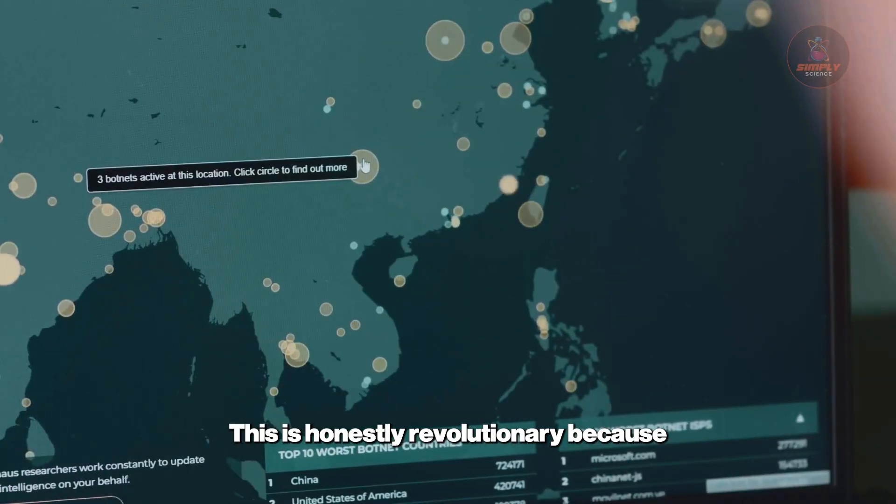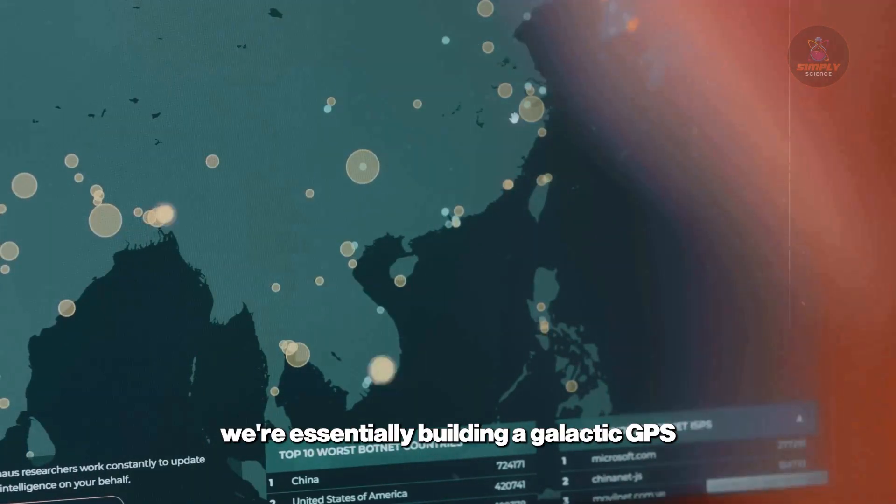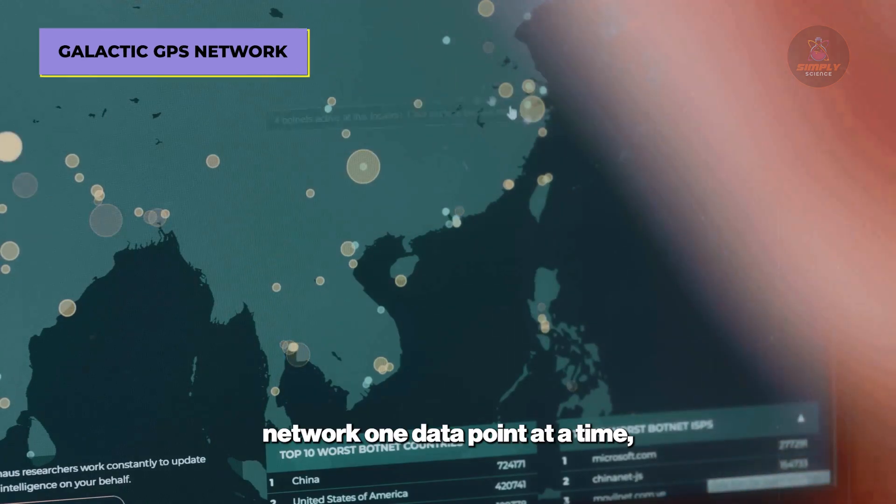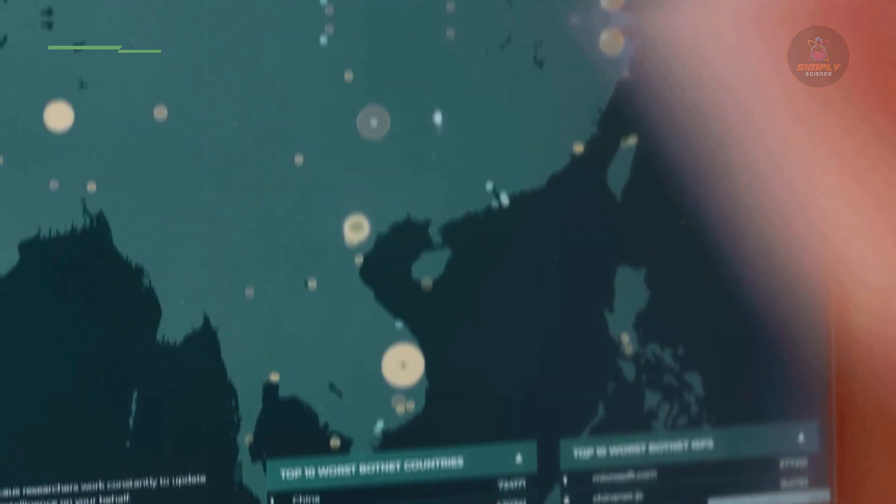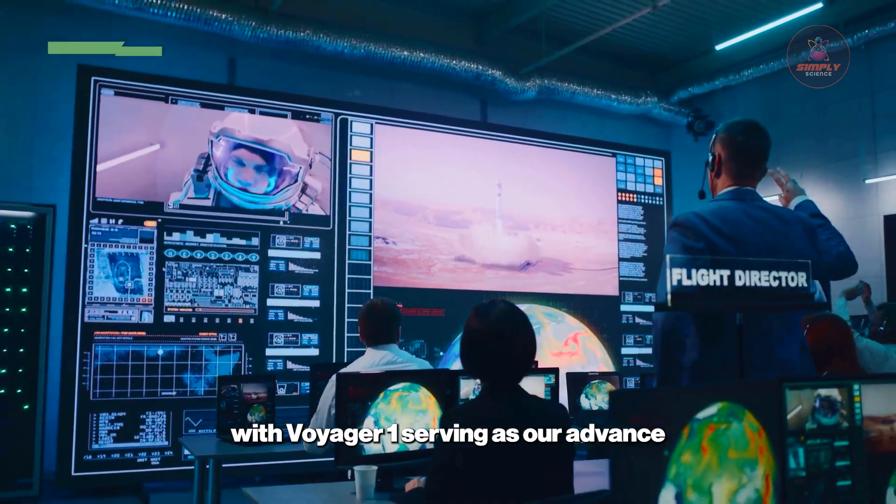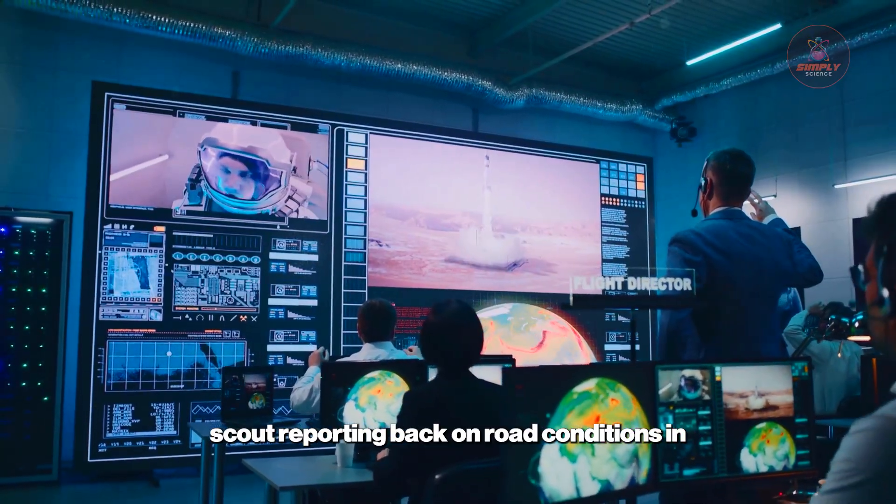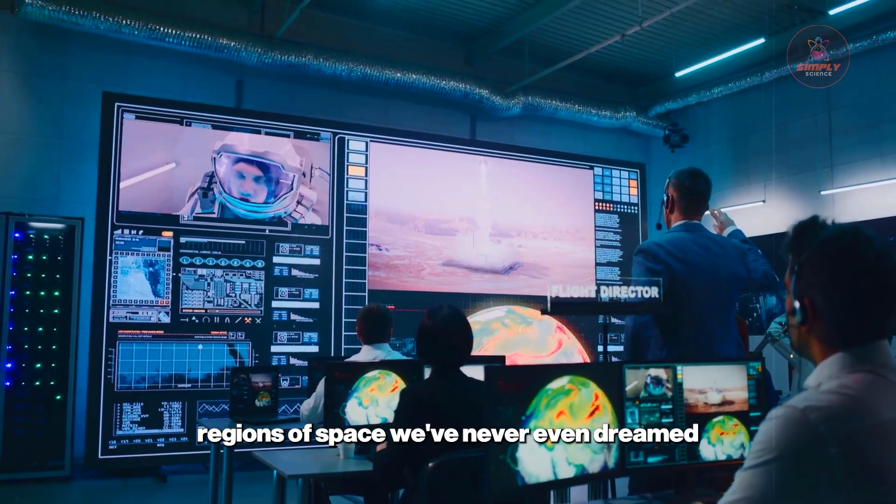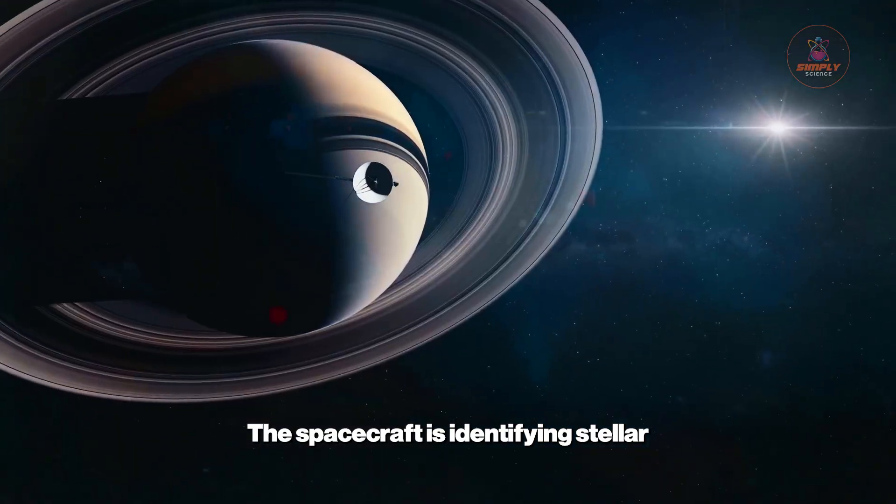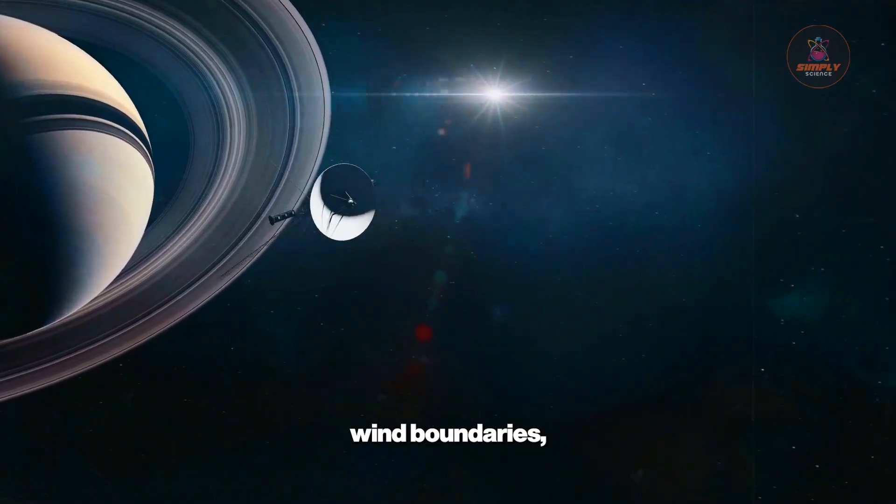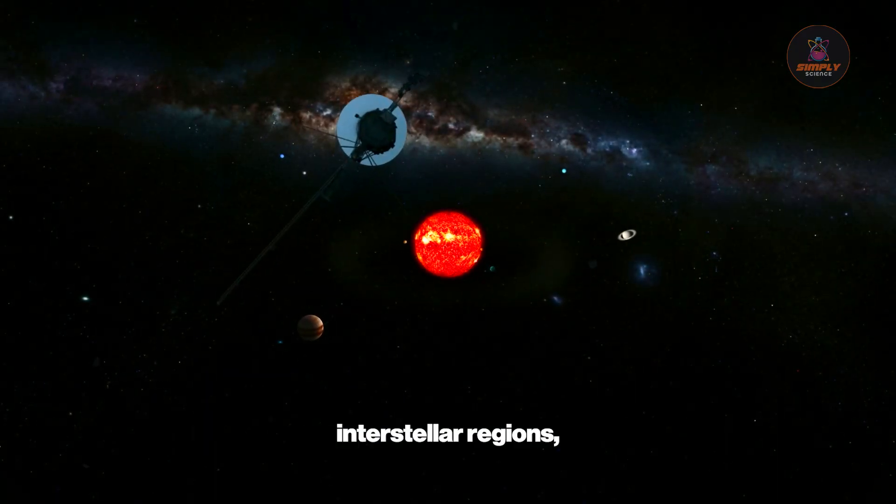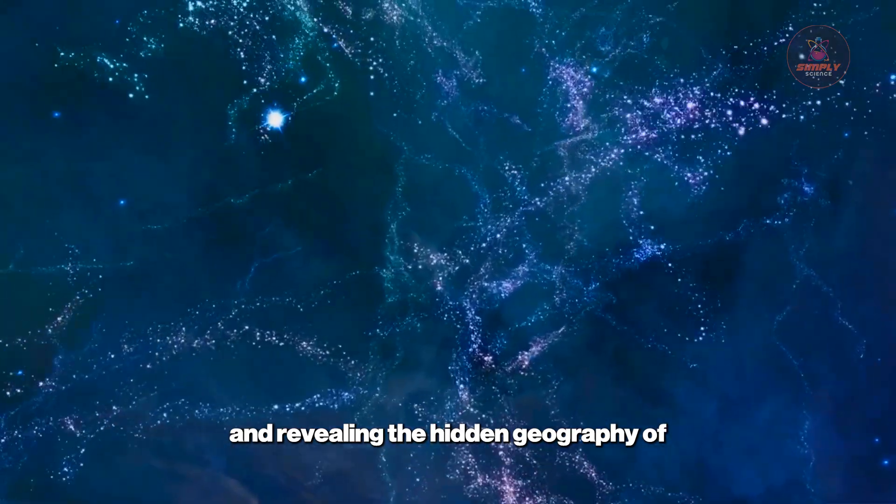This is revolutionary because we're essentially building a galactic GPS network one data point at a time, with Voyager 1 serving as our advanced scout reporting back on road conditions in regions of space we've never even dreamed of reaching. The spacecraft is identifying stellar wind boundaries, mapping the edges of different interstellar regions, and revealing the hidden geography of space itself.